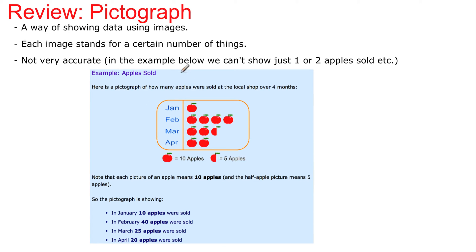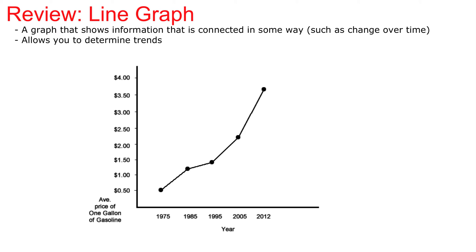Stop at any point to take some notes — take this down, take the example down, and definitely write down the pros and cons. Let's continue on to another common one: the line graph. A line graph shows that information is connected in some way, such as a change over time. You're going to see a lot of line graphs when talking about something over time — how things change, what a trend looks like.